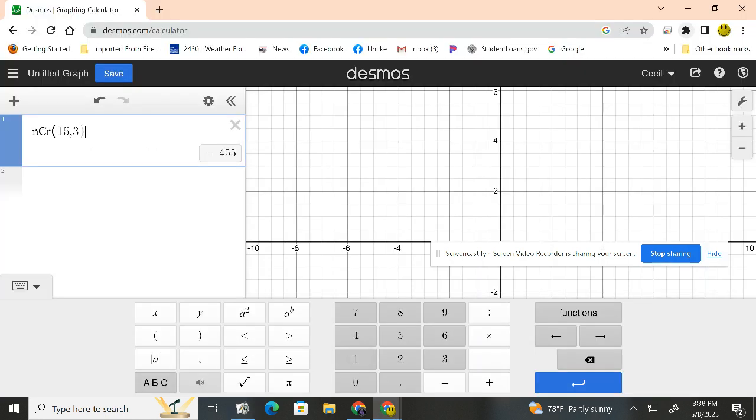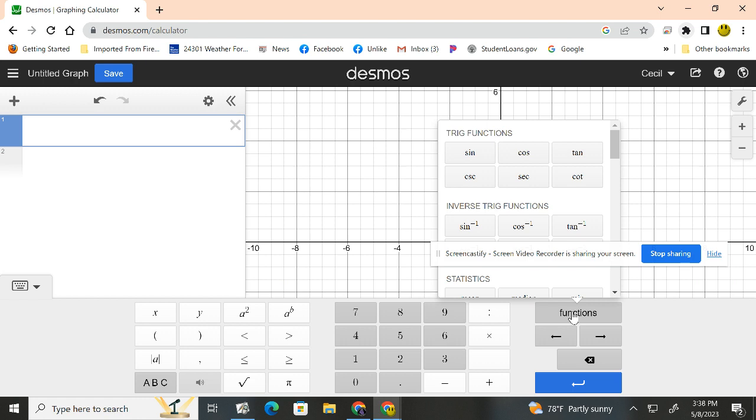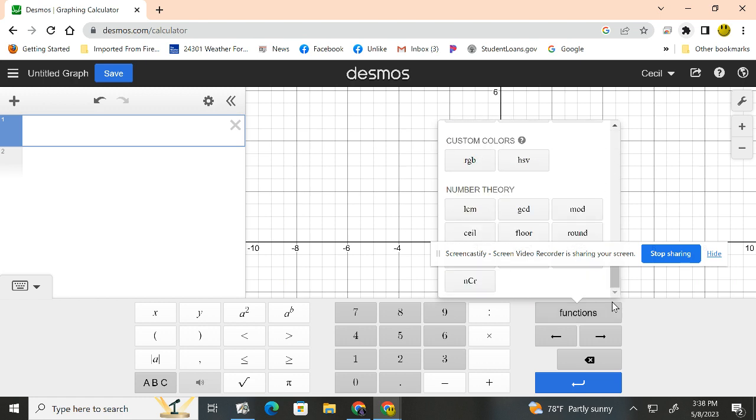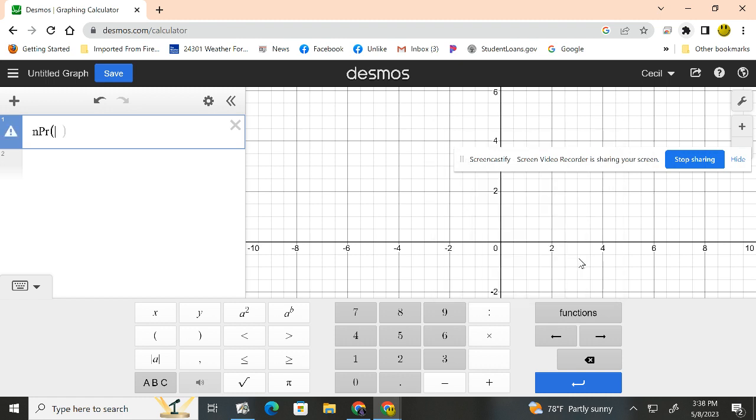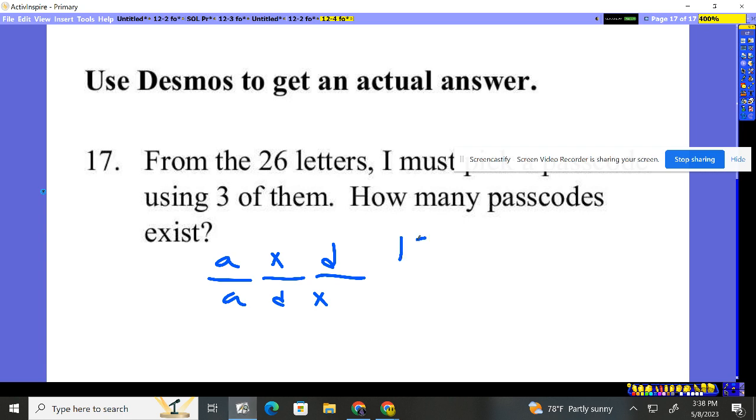So we're going to come back in here. We're going to pull up the permutation. Let's close that out. Let's hit our functions, scroll all the way down, move this guy again, all the way down. We're using a permutation and there's 26 letters. And we were choosing three of them. We're putting in 3, 15,600. 15,600 different passcodes we can make from just using three letters of the alphabet without repeating one of those letters.